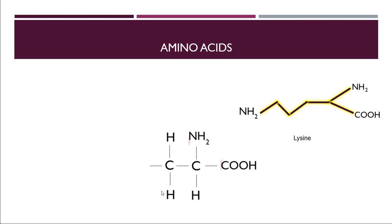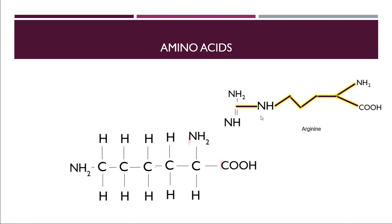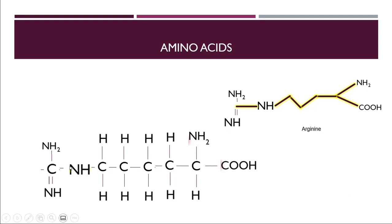Next is lysine. Use the fork structure and count how many more carbon atoms to add: one, two, three — so attach three more carbons and an NH2 at the end. For arginine, start with lysine's chain, remove one hydrogen from the terminal nitrogen since it can only make three bonds, attach one more carbon, and attach the guanidinium-like group. That terminal carbon already has four bonds made, so no additional hydrogen is needed. This is the structure for arginine.